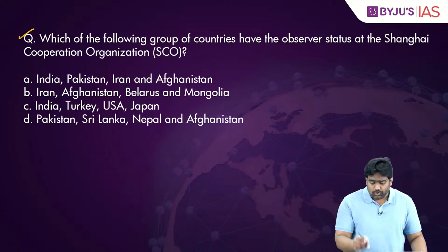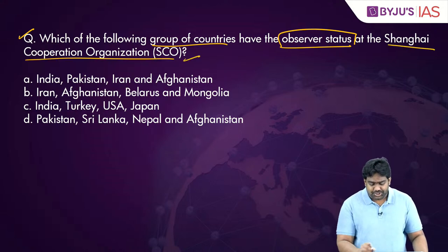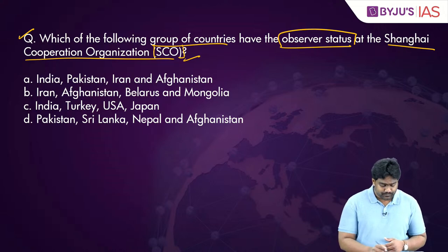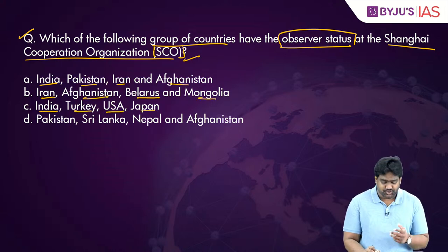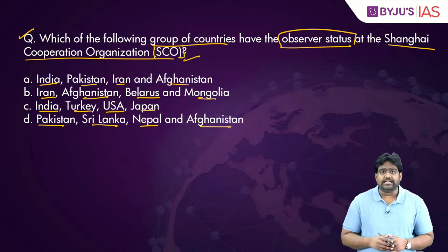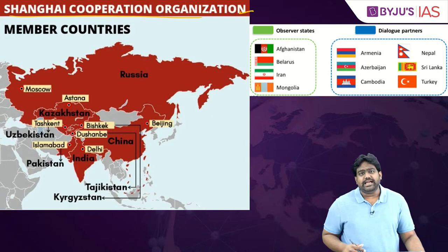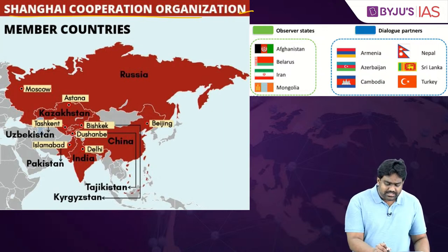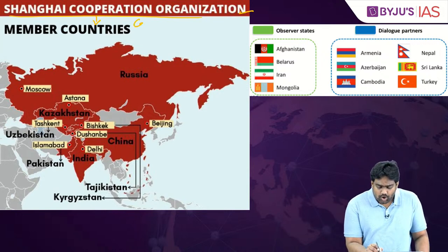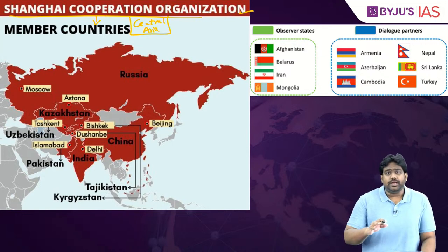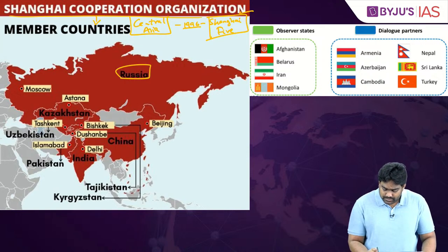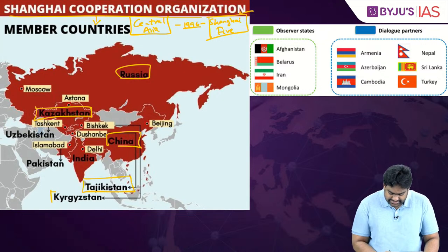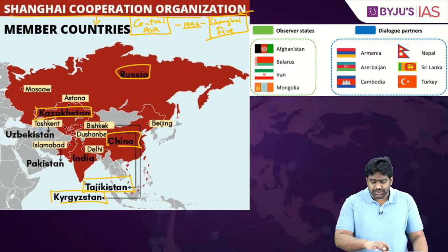The second question asks which group of countries has observer status at the Shanghai Cooperation Organization or SCO. The SCO is a very important regional grouping primarily focused on Central Asia. It was formed in 1996 as the Shanghai Five, including Russia, China, Kazakhstan, Tajikistan, and Kyrgyzstan. Later in 2001, Uzbekistan was brought in and the group was renamed the SCO — the Shanghai Cooperation Organization. It focuses on political, economic, and strategic security in the Central Asia region, covering connectivity, trade, and resource exploitation.